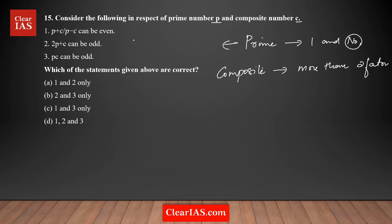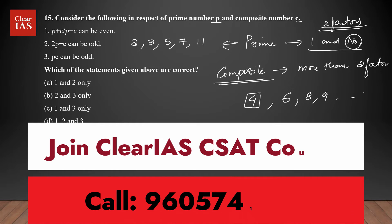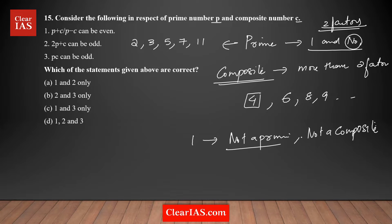Examples of prime numbers: 2 is the only even prime number, then you have 3, 5, 7, 11 — all prime numbers having only two factors. Composite numbers are any numbers other than prime numbers, like 4, 6, 8, 9. Always keep in mind: 1 is neither prime nor composite.